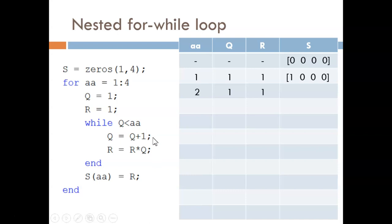Q is incremented, and then R is reassigned the value of 1 times 2. We loop up to check the condition. Is 2 less than 2? No, that is false. So, we end the while loop.